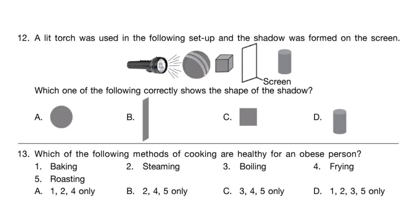Question 12: A lit torch was used in the following setup and a shadow was formed on the screen. Which one of the following correctly shows the shape of the shadow? The correct answer is option A.